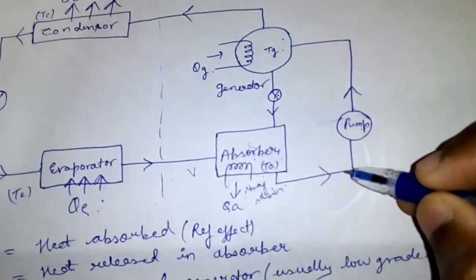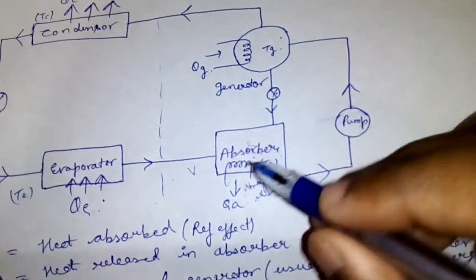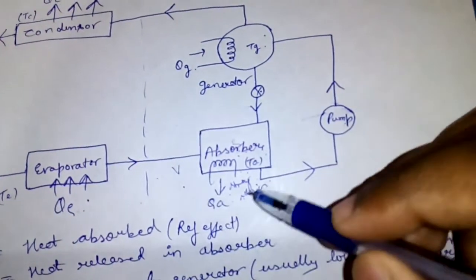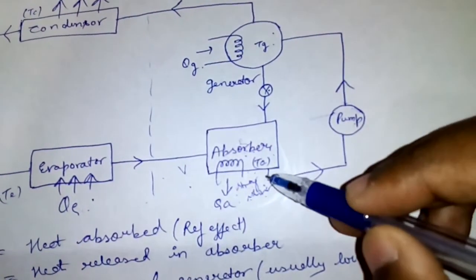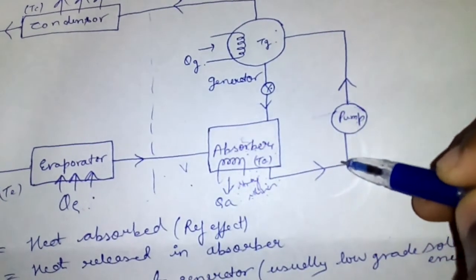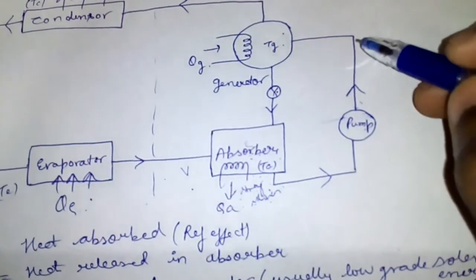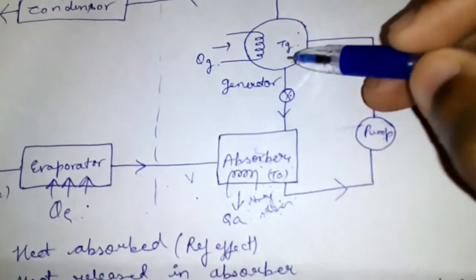The strong solution has high concentration of refrigerant, so it is called strong solution. The strong solution which is in liquid form is pumped and delivered into the generator.